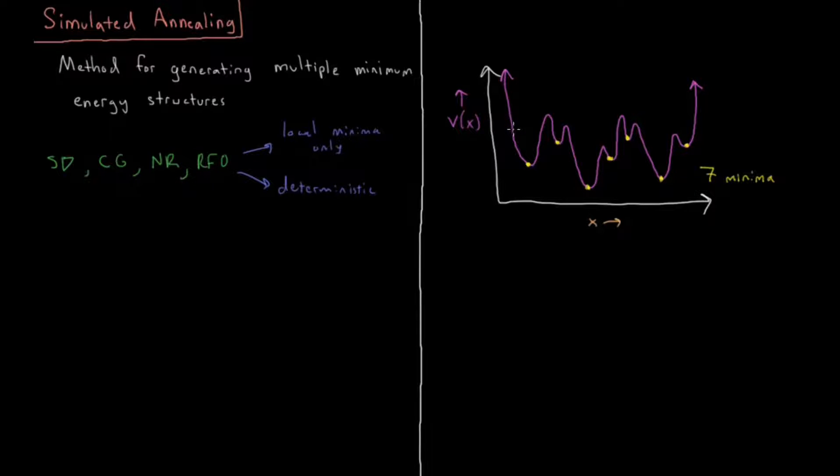So if I start here and I run steepest descent, this is always going to be the answer. Maybe if I tweak around the parameters, I'll get slightly different behavior. But if I do it with the same parameters and I start at the same point, I should get the same result every time. That's called deterministic or determinism.